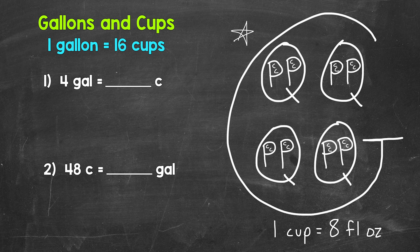Starting with number one, where we have four gallons equals how many cups? Well, we have 16 cups, 16 cups, 16 cups, and 16 cups. So we need to do four times 16. And that's how we convert from gallons to cups. We multiply by 16.